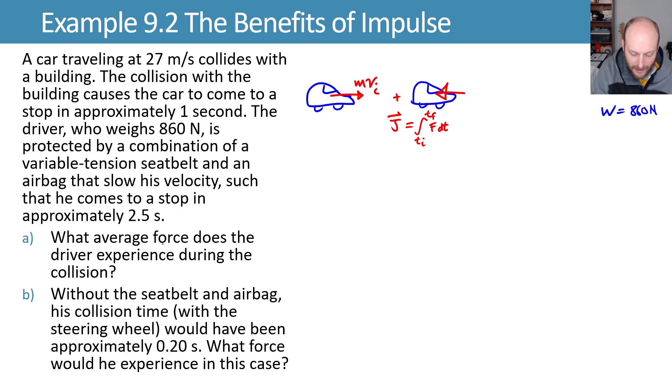So what I'm going to do for part a, it asks for the average force. Lucky me, I can say that's equal to the average force times delta t. And so that combination of my initial linear momentum plus the impulse will end up giving me my final linear momentum of the car, which is zero. Mass times velocity final is zero.